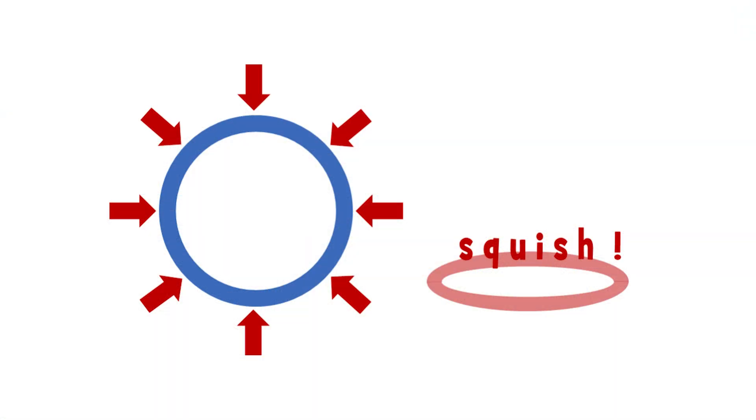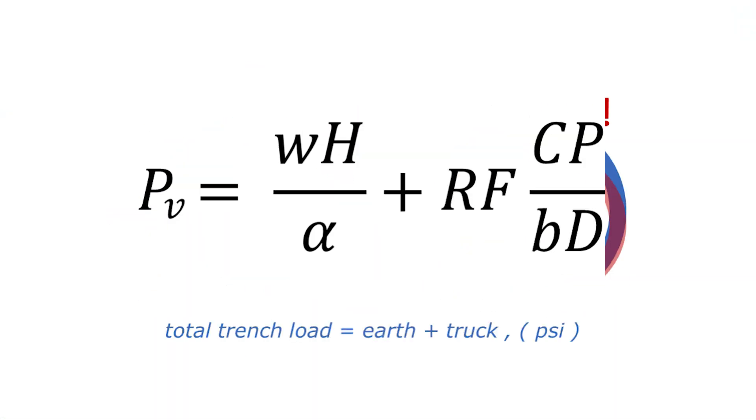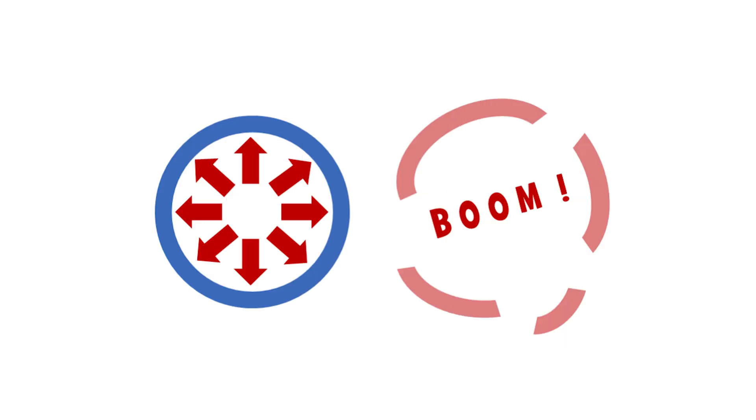Ductile iron pipe design is based on a three-prong approach, taking into consideration external earth load, which includes bending stress and barrel deflection, the live load a pipeline will be subjected to, traffic above the main, and the maximum internal pressure the pipeline is expected to encounter. The appropriate class of DI pipe is selected based on the worst-case scenario of these three design criteria.